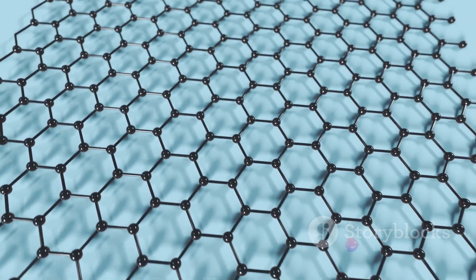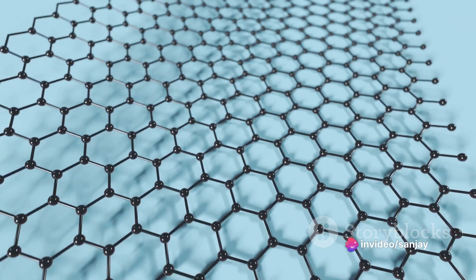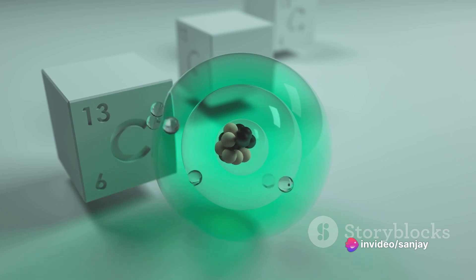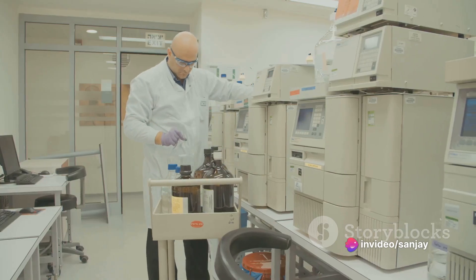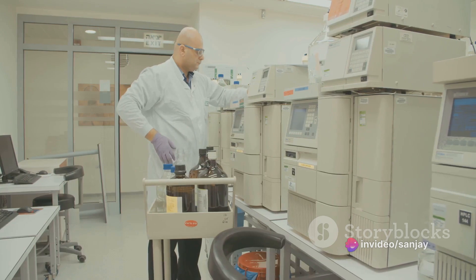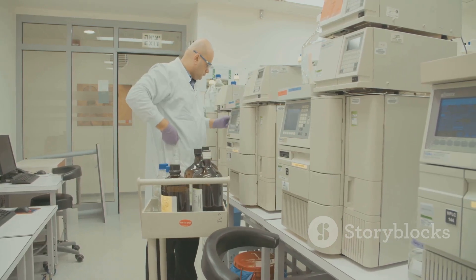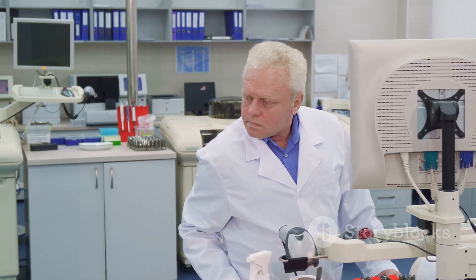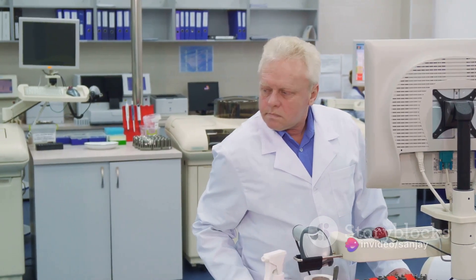The graphite is compressed into a target and placed in a particle accelerator. The accelerator bombards the sample with high-energy ions, causing the carbon atoms to release particles that can be measured. The final step involves measuring the amount of carbon-14 in the sample using a technique called mass spectrometry. This technique allows scientists to count the number of carbon-14 atoms present and compare it to the number of stable carbon-12 atoms. By calculating this ratio, scientists can determine the age of the sample.